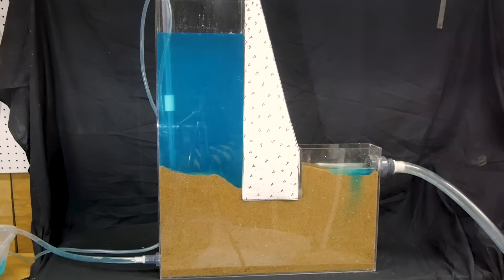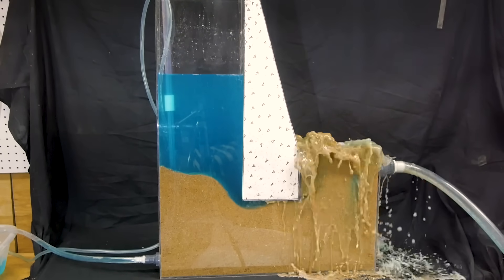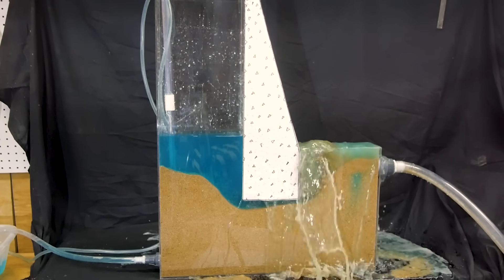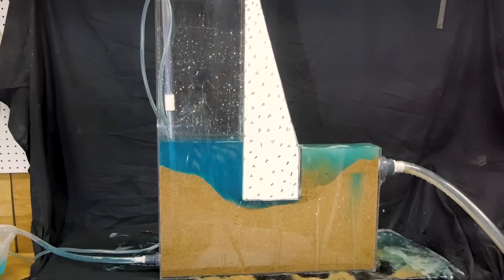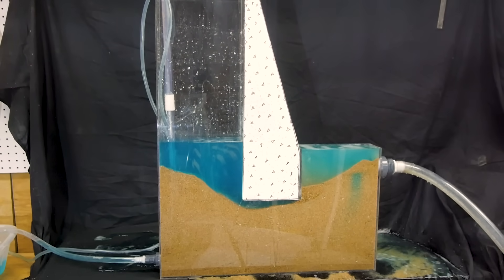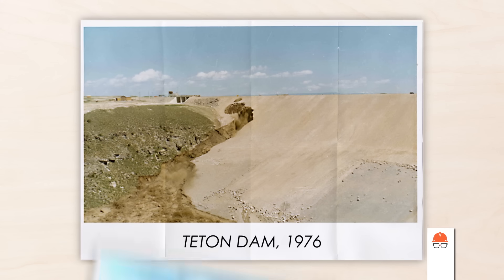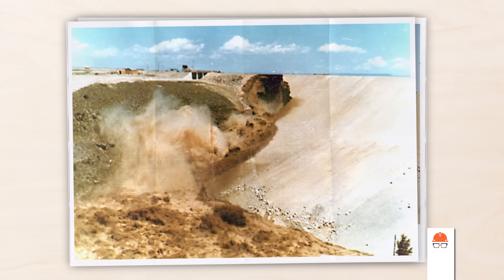Eventually, the erosion pipe reaches the reservoir, leading to catastrophic failure of the dam's foundation. This isn't just speculation — piping is the number one cause of failure for earthen levees and dams.